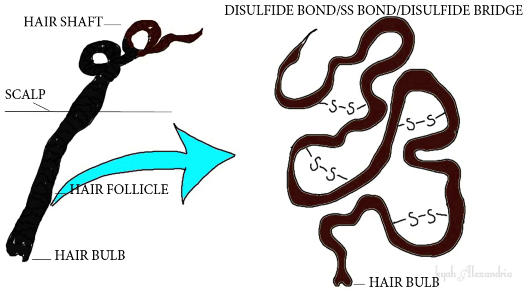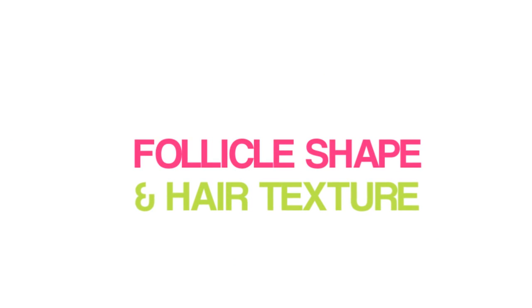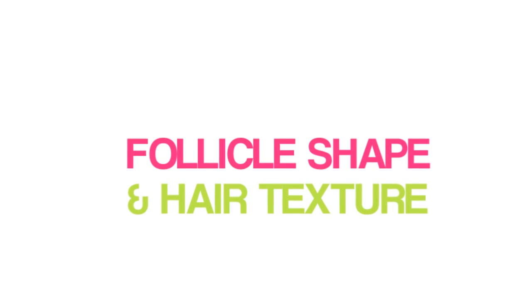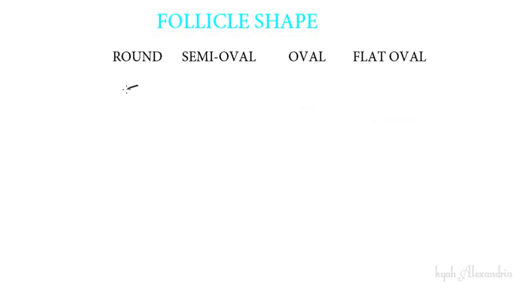This type of bond is permanent unless you add processing chemicals like those in relaxers. If you take a look at the cross section of the different shapes of the follicle, you'll see it ranges from a round shape to a flat oval shape. This illustration shows that the hair follicle shape determines the texture of hair.